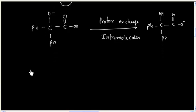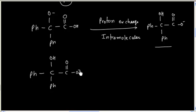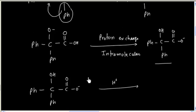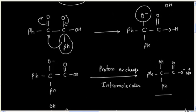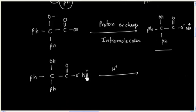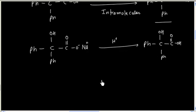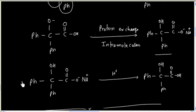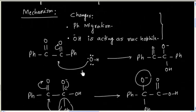If we do acidification, initially we will get the product in the form of a salt. Now, if this salt is acidified, we will have benzilic acid. So this reaction is known as benzilic acid rearrangement. The important points in this reaction are: one is phenyl shift, and another is attack of OH minus on the carbonyl carbon.